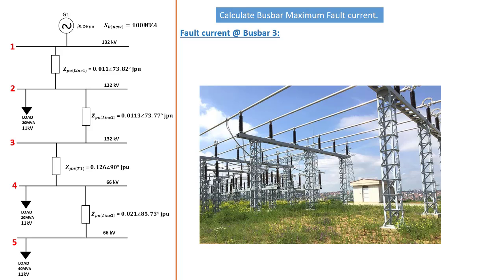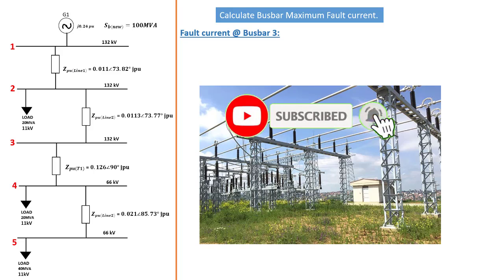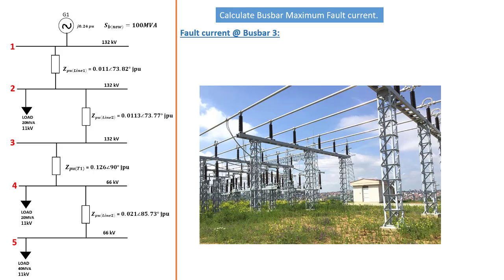Hey guys, welcome back. This is part two from tutorial one on how to calculate the maximum short circuit current available at the bus bar on our series of electrical network design. If you haven't yet subscribed to SimTech channel, please do it right now so you never miss videos like this. In this tutorial, we're going to continue from where we left off — determining the current that must flow on bus bar three, bus bar four, and bus bar five. We've already determined the current flowing on bus bar one and bus bar two in the previous tutorial.